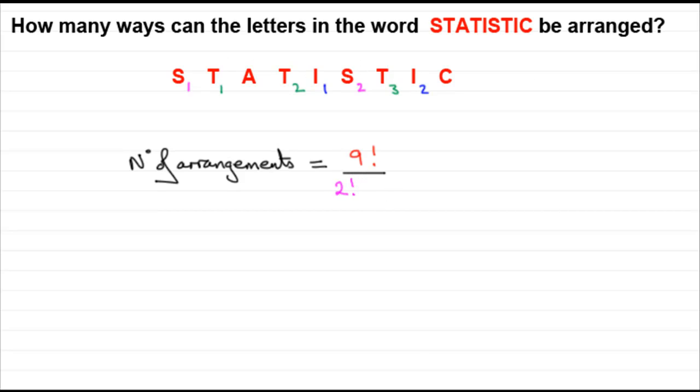When it comes to the T's, any of the T's can be rearranged amongst themselves three factorial ways. And finally, for the I's, because there's two I's there, they can be rearranged amongst themselves two factorial ways. So what we've got then is that this comes to 15,120.